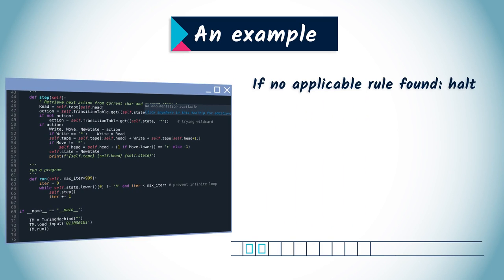If we execute this machine on input 011000101, nothing happens and the output is equal to the input. This is fine. The machine is expected to halt immediately.